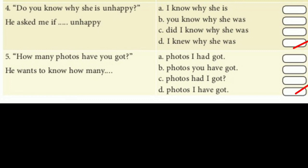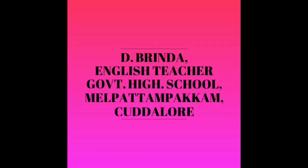Fourth: 'Do you know why she is unhappy?' — She asked me if I knew why she was unhappy. Answer: 'I knew why she was unhappy.' Fifth: 'How many photos have you got?' — He wants to know how many photos I have got. Answer: option D — 'photos I have got.' Okay children, I hope all of you understood. You can keep listening and reading many books. You will understand better. Thank you.